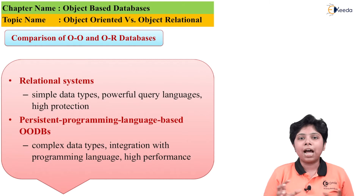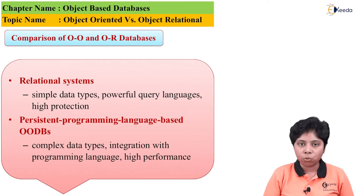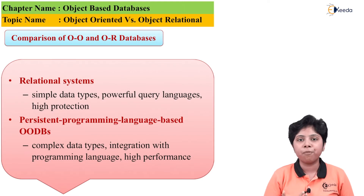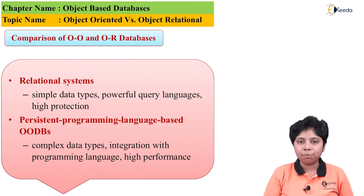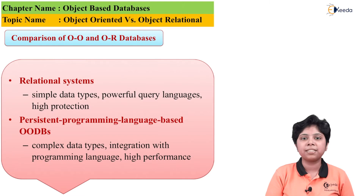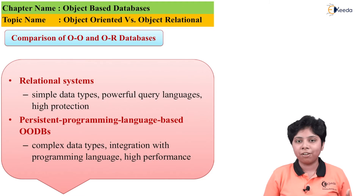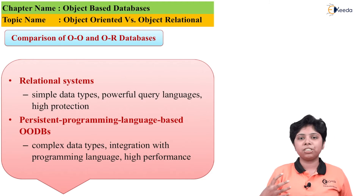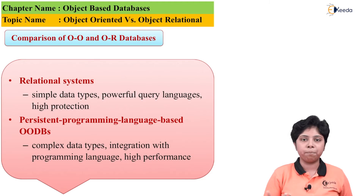Where large computation time is required for a large database stored in secondary memory and the application needs high performance, we choose the object-oriented database, which is based on persistent programming languages. This gives many capabilities to the user, though data protection becomes lower. However, computation time and access time will be much lower compared to the other two database systems.